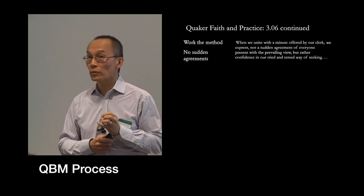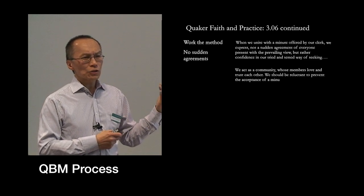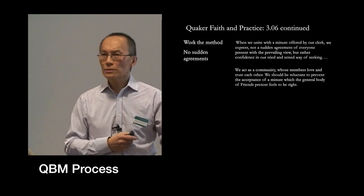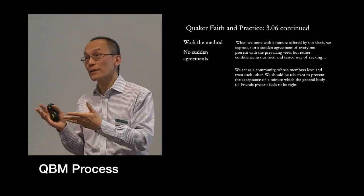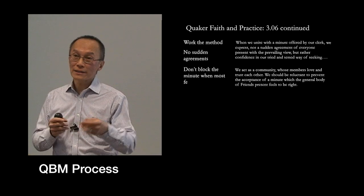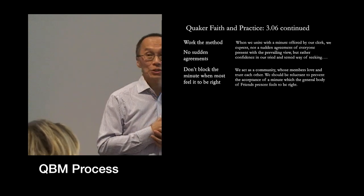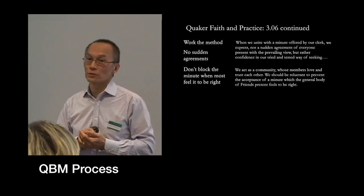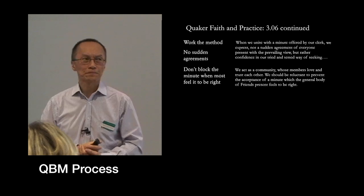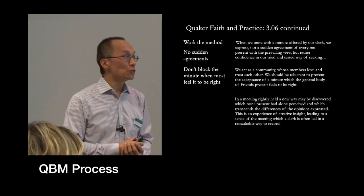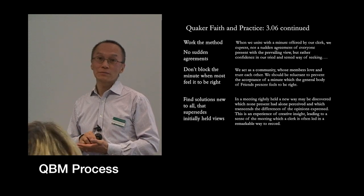It's really a very difficult task for the clerk to decide whether or not that's the case. We're also asked not to block a minute which we feel strongly against if the rest of the group think that it's the right course of action. And you will immediately think, but this then contradicts the idea of compromise and coming to consensus. I think this is a particularly hard aspect to try and square the circle of. Finding new solutions that supersede our initially held views is very much what this process is meant to be about.